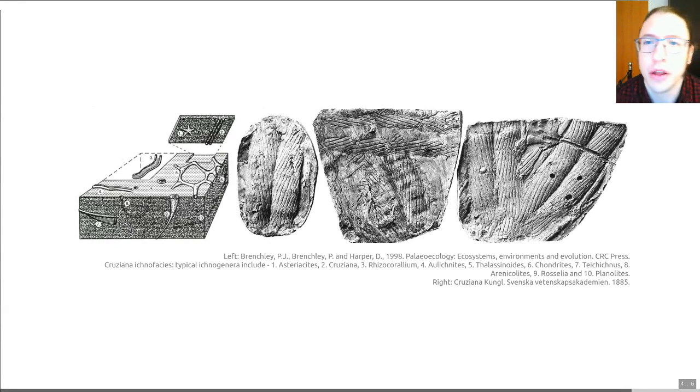Next we have the Cruziana ichnofacies, and this is best developed below the normal fair weather wave base, so a little bit deeper than Scolithus. We associate this with well-sorted silts and sands, and those are generally accumulating within a low energy environment. The Cruziana ichnofacies includes a number of ichno genera. It's named after Cruziana, and Cruziana is what's shown here. This is the kind of trail that we associate with the trilobites, for example trilobite moving traces or crawling traces.